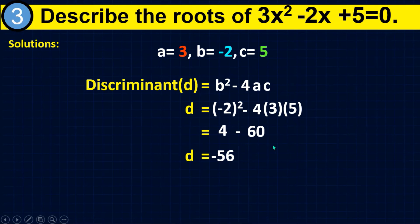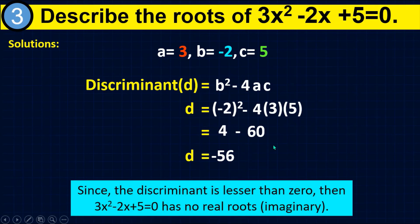Since our discriminant is negative 56, which is less than 0, the given quadratic equation 3x squared minus 2x plus 5 equals 0 has no real roots — these are called imaginary roots.